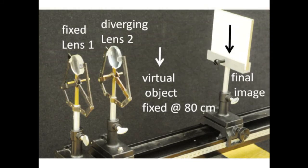Place the diverging lens 2 at the 70 centimeter position and carefully locate the final image. The diverging lens is seeing the virtual object locked at 80 centimeters and pushing the final image back.